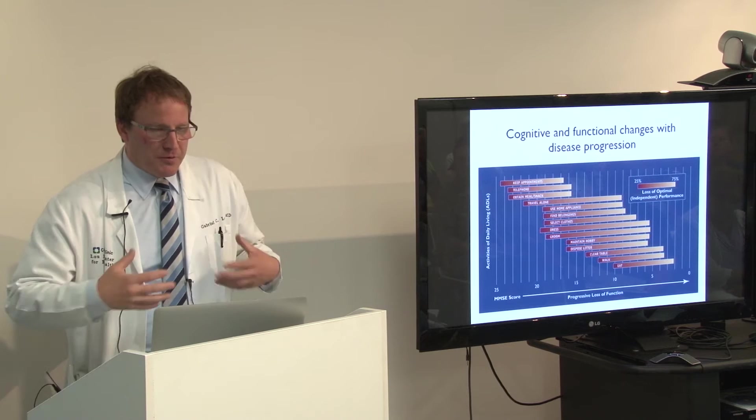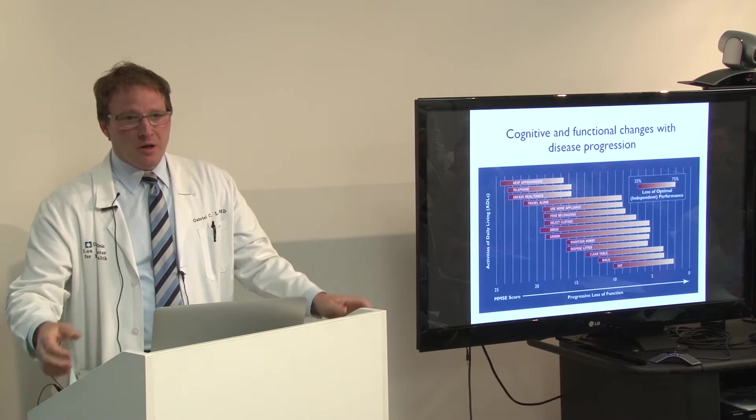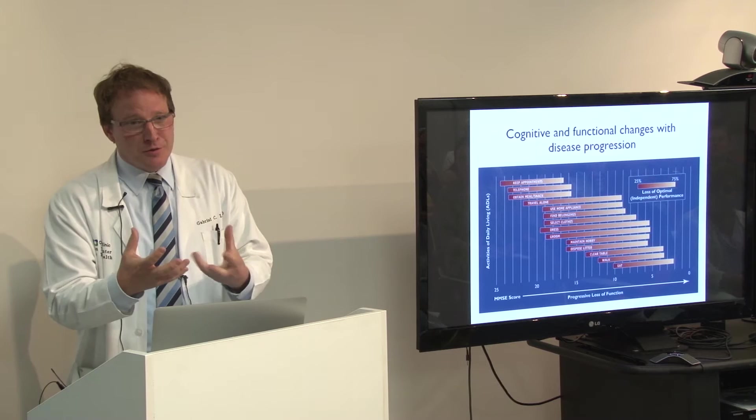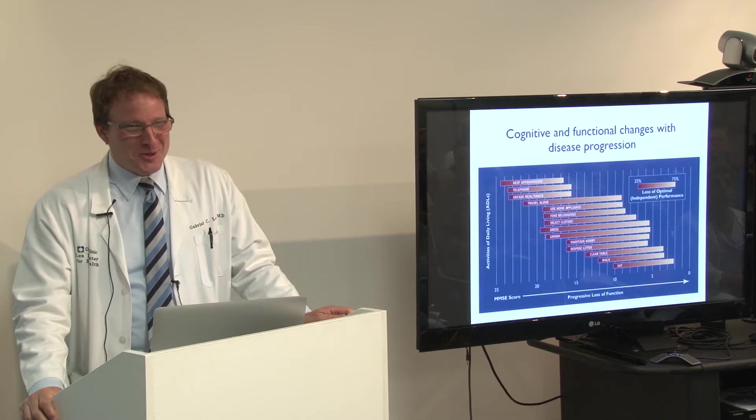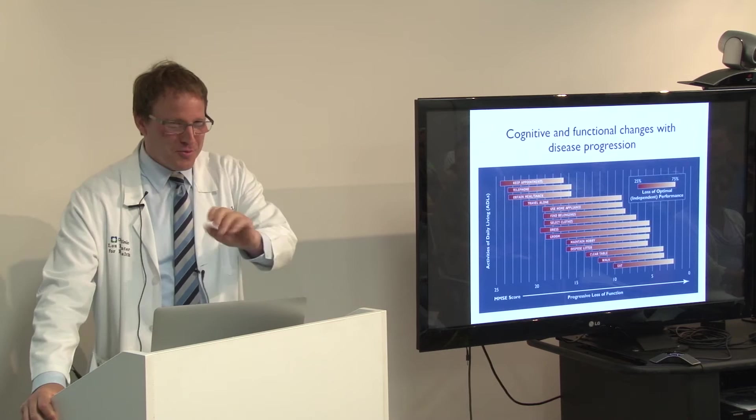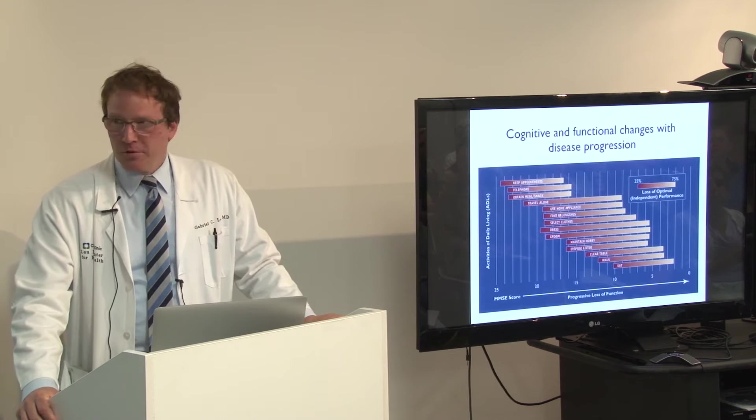The frontal lobes are very important to generate feelings for others. So if you don't have your frontal lobes to decide how you're going to deal with somebody crying or somebody being hurt, then you're not going to feel the right things. I was instructed to restrict questions for the end of the talk, so if you don't mind keeping your questions for after the end of the talk.